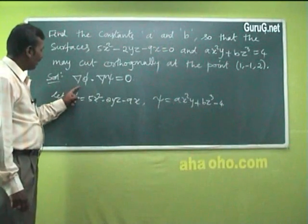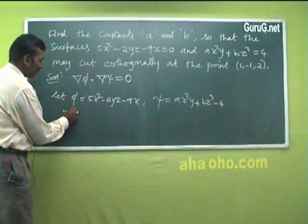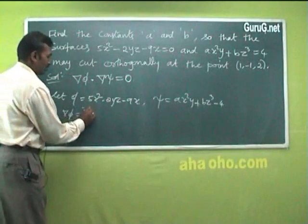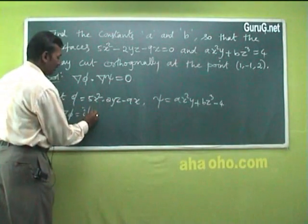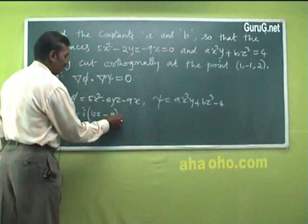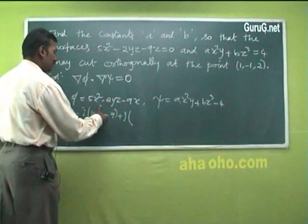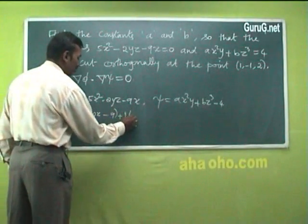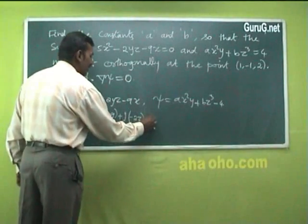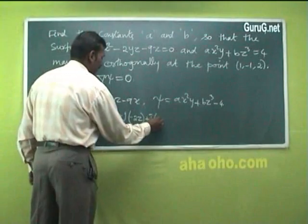Now compute del φ and del ψ. Del φ = i·(∂φ/∂x) + j·(∂φ/∂y) + k·(∂φ/∂z), which gives del φ = i·(10x − 9) + j·(−2z) + k·(−2y).